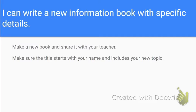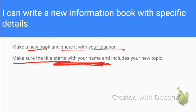Pause the video again. We're going to make a new book and share it with your teacher. Make sure the title starts with your name — in my class, you have to have your name as the first thing on your title. Then include your new topic. Put the title as something like 'James and the Mall.' It does not have to say 'information book' anymore. Just put your name and the topic in your title and share it with me.